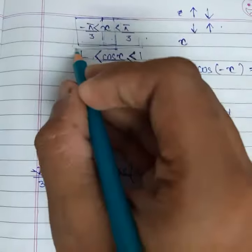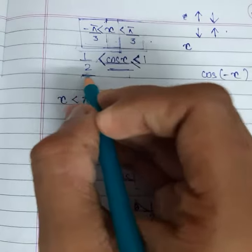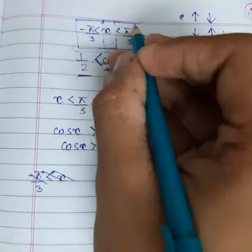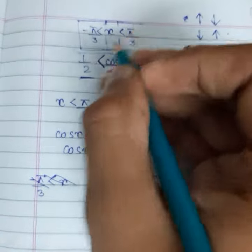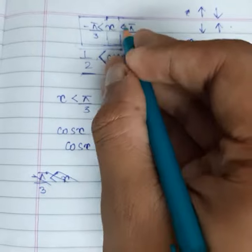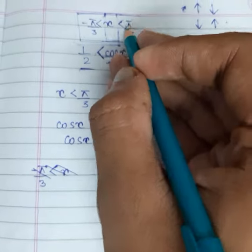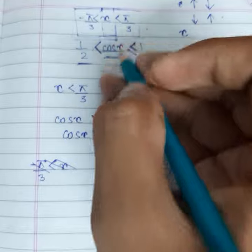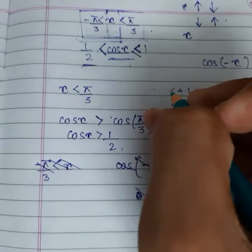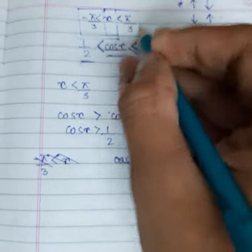But when we are trying to find out the minimum value, the minimum value will be when x approaches its maximum value. Then the cos x will have its minimum value. So x will approach its maximum value at π by 3 according to this range, and so the minimum value for cos x will be obtained at that point only, which is cos of π by 3.